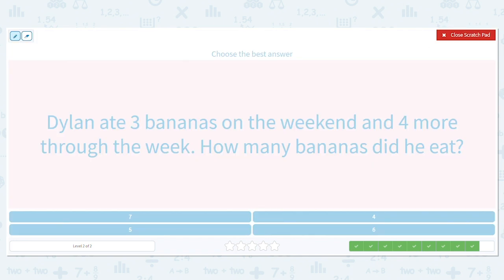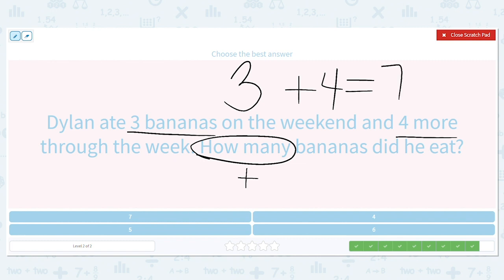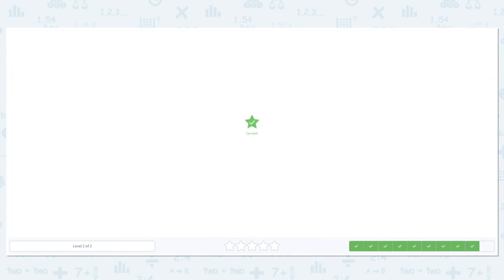Okay. How many bananas on the weekend? How many throughout the week? And how do we know we're adding? How many? And we add. What is three plus four? It's seven. So he ate seven bananas.